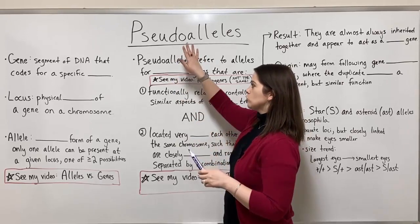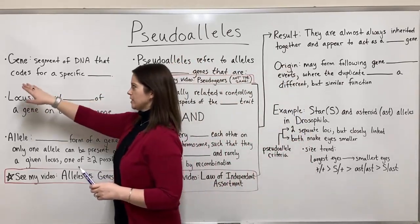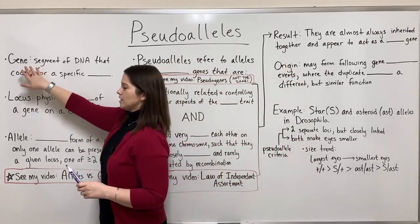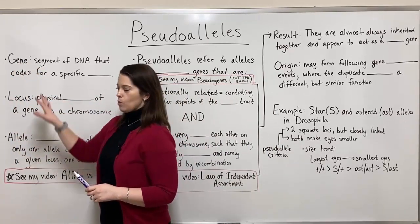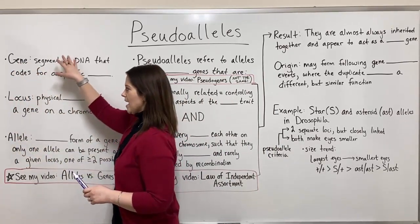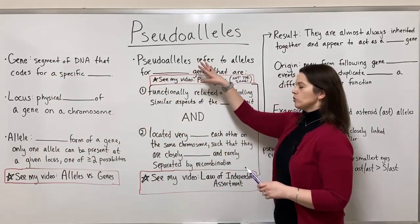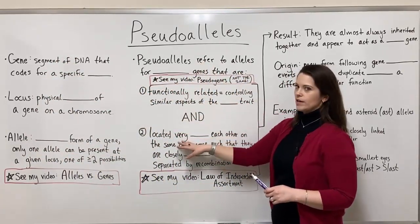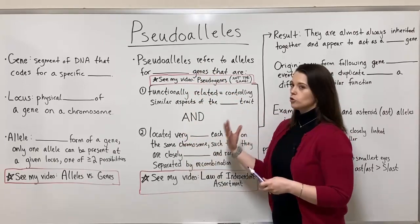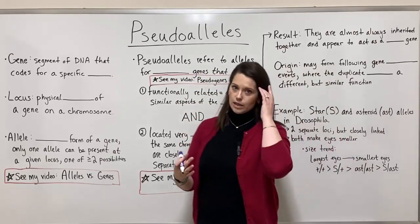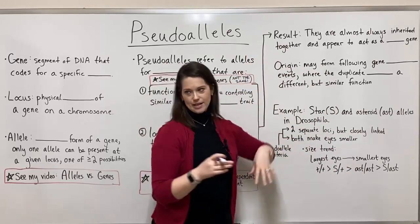Before we can really talk about pseudo-alleles, I need to make sure that you understand some other terms: gene, locus, and allele. Once we have covered those, we'll go on to talking about what pseudo-alleles are and the two criteria that have to be fulfilled for two alleles to be pseudo-alleles. And then we will talk about the origin and give an example.